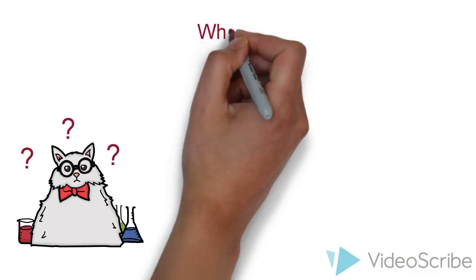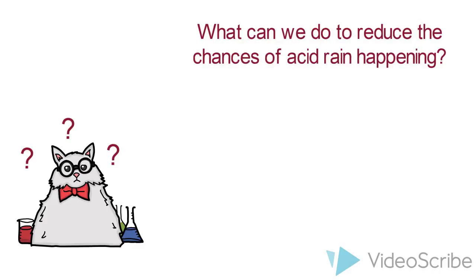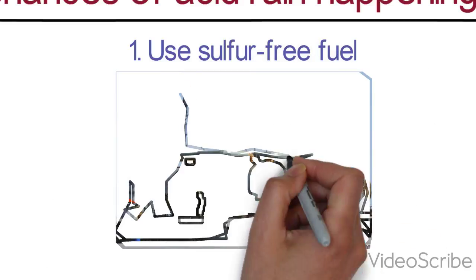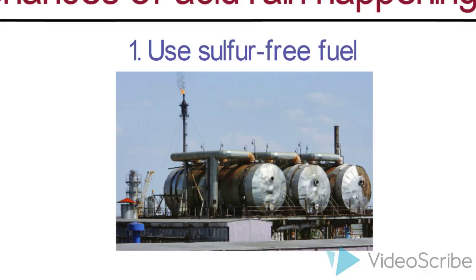Well now, the thing that we should ask ourselves is that what can we do to reduce the chances of acid rain happening? The first thing that we can do is to use fuels that contain little or no sulfur. This will in turn prevent sulfur dioxide from forming.